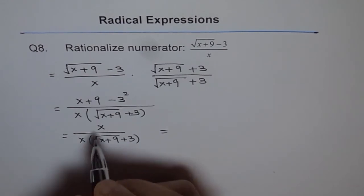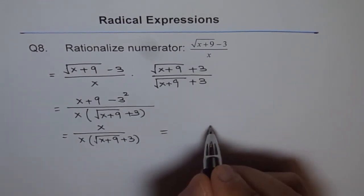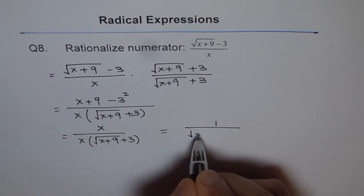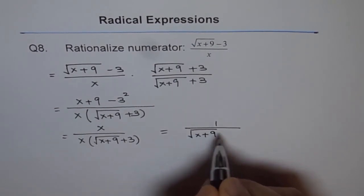This equals x and x cancel out and we get 1 over square root of x plus 9 plus 3.